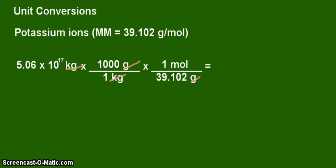So let's do the calculation. And the answer is 1.30, that's 1.30 times 10 to the 19 moles of potassium ions.